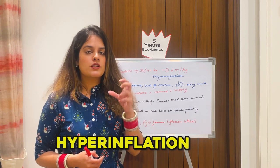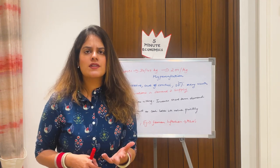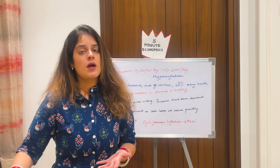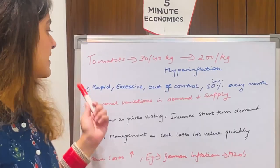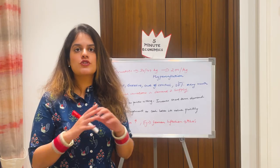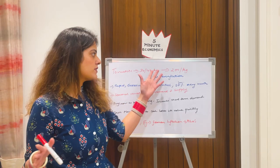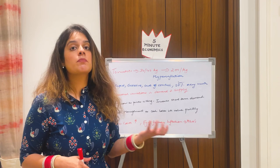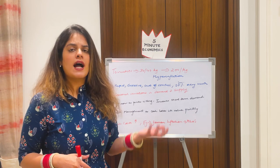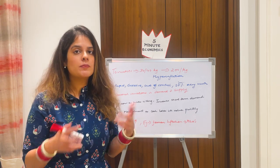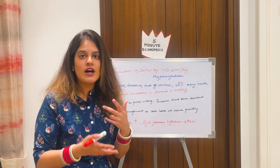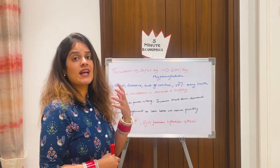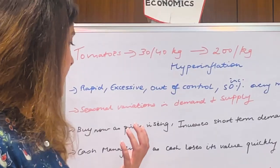Inflation is a gradual increase in price over a period of time, but hyperinflation happens very suddenly. It is basically a rapid, excessive, out-of-control rise in prices. In the case of tomatoes, that's exactly what is happening. A 50% increase every month is known as hyperinflation — also called galloping inflation, because prices are running fast. The very name hyperinflation tells us what it actually is.